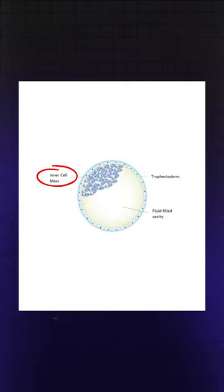Apart from that, cell numbers — 3 to 6 cells or 8 to 6 cells — they will grade. Apart from that, on the fifth day of the grade, inner cell mass is where the baby will develop, and that is what they will grade.